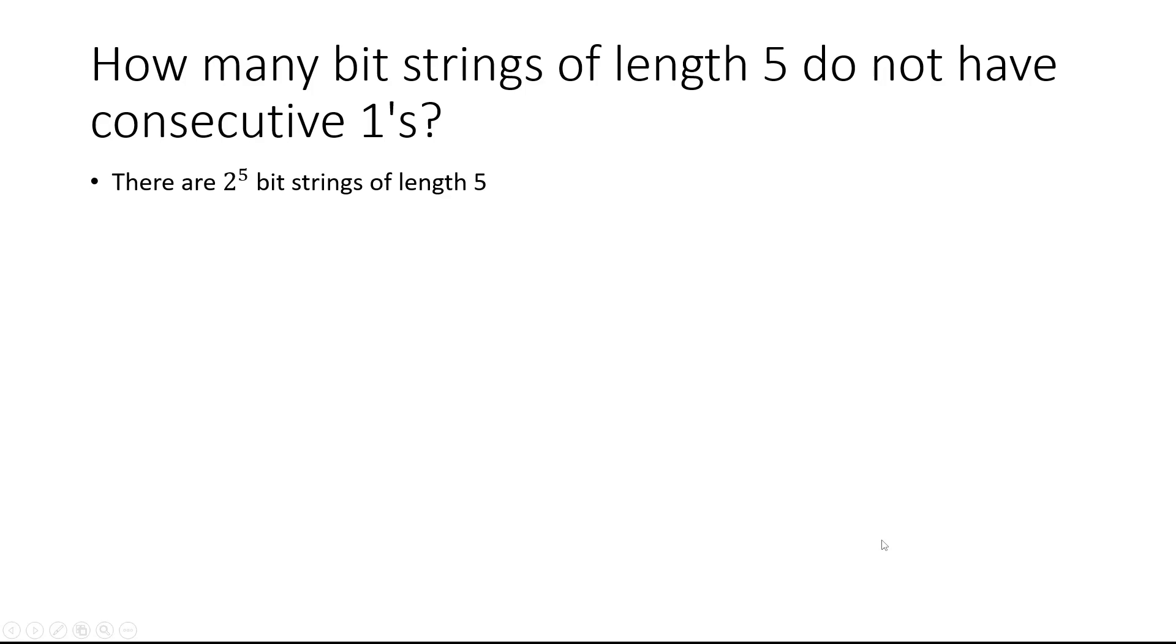Let's first start off with bit strings of length 5. There are 2 to the 5th of them because there's 5 spots and 2 options for each spot. So that's going to be 2 to the 5th, which is 32 total.